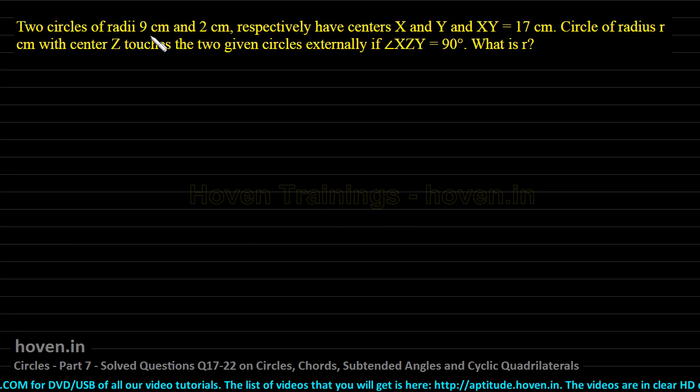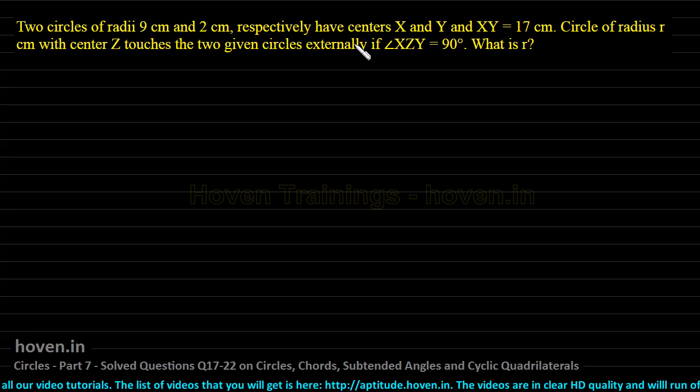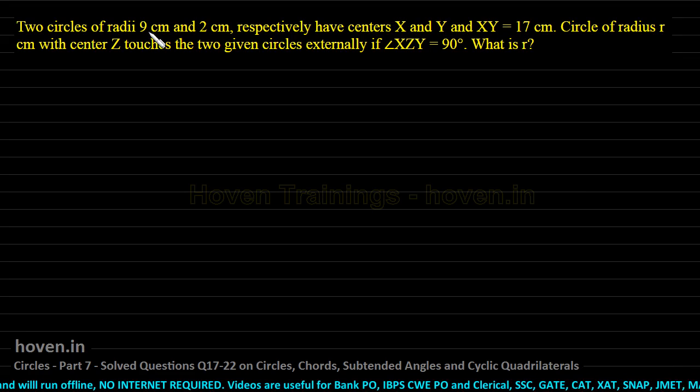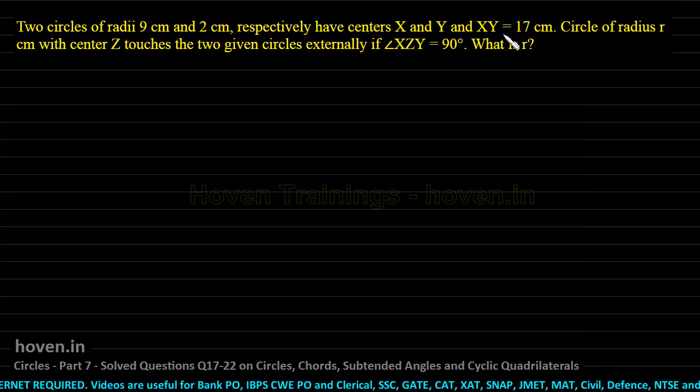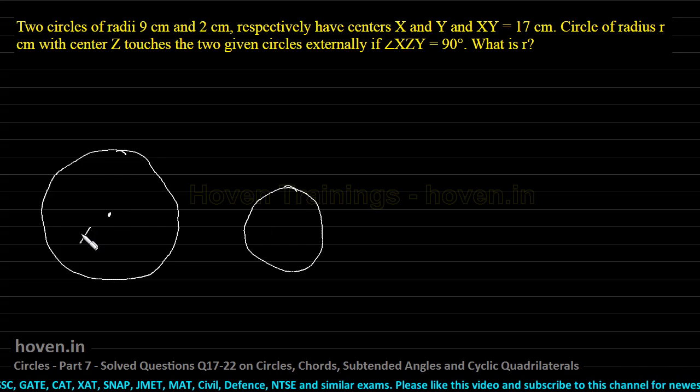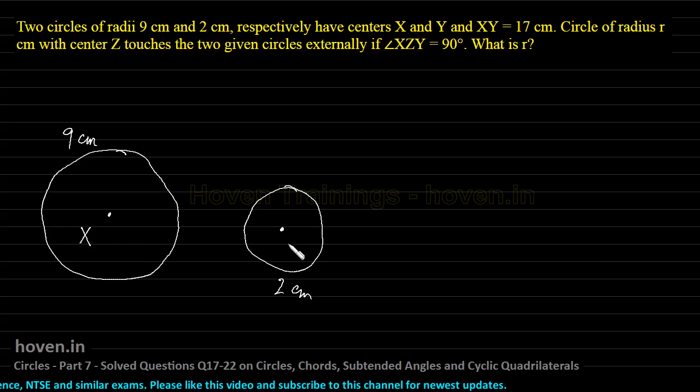Two circles of radii 9 centimeter and 2 centimeter respectively have centers X and Y, and XY is 17 centimeter. This part needs to be understood first. The radii will add to 11, and this distance is more. This means the two circles are not touching each other. Let us draw two circles to visualize things.